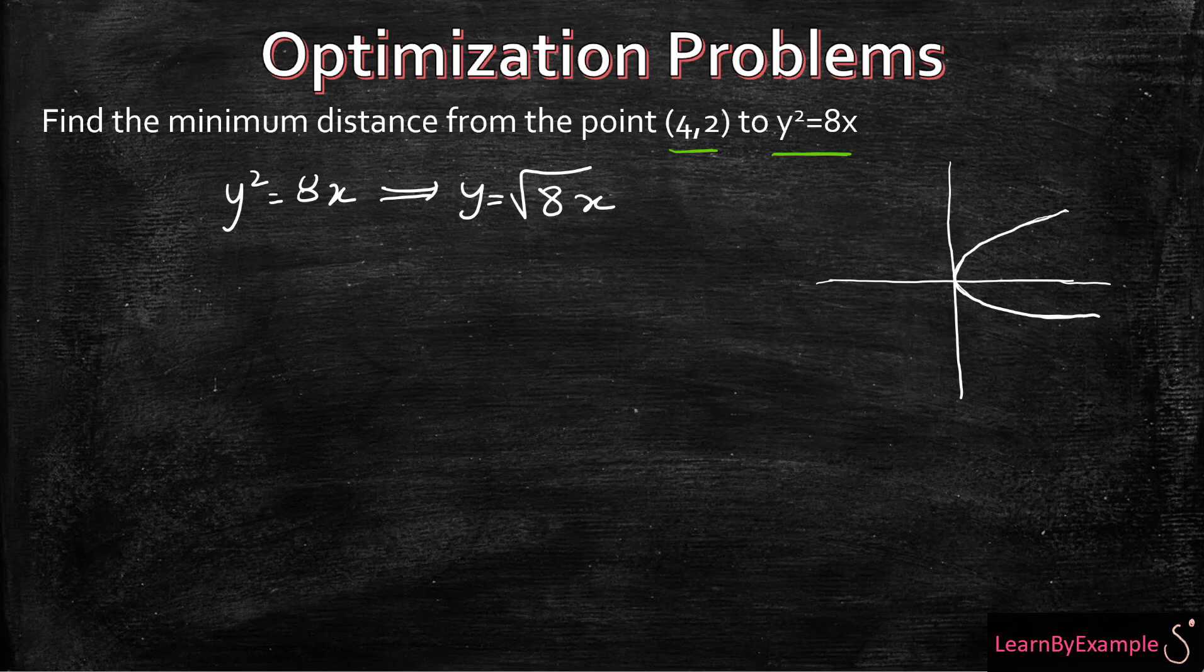So we also have a point, right? So let's say this is 4 and that this is 2, so this is going to be the point (4,2). And therefore, if this is the point here on y equals root 8x, we want to find this distance between them, d. So the question is saying the point (4,2) is not on the y squared equals 8x graph - how far away is it?